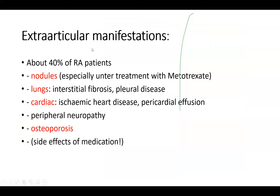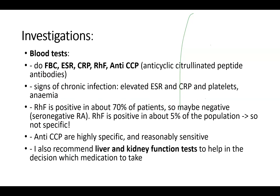There are also extra-articular manifestations. About 40% of all patients with rheumatoid arthritis suffer from them. These can be simple things like nodules, especially if the patient is treated with methotrexate. There might be fibrosis of the lungs or pleural disease. A lot of patients also suffer from ischemic heart disease and might present with a pericardial effusion. There may be peripheral neuropathy. Osteoporosis is really important to consider — chronic systemic inflammation causes both periarticular and systemic osteoporosis. And you need to consider the side effects of medication, such as oral corticosteroids, which lead to osteoporosis and diabetes.